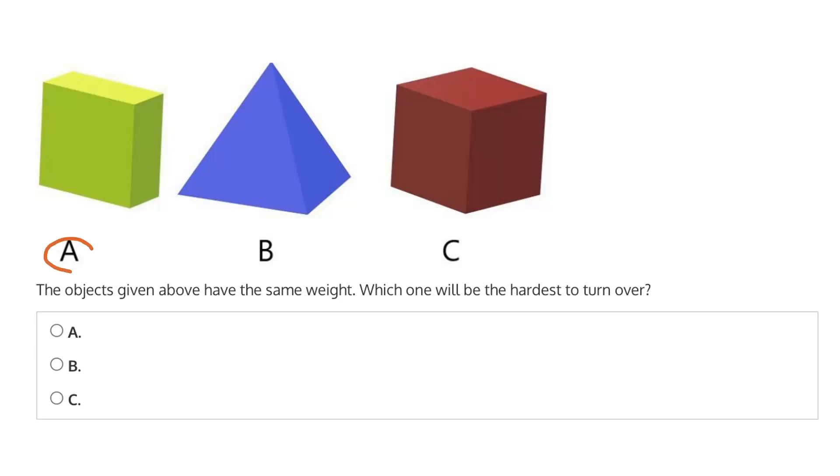Option A, which is a rectangular prism, or a cuboid. Option B, a pyramid. Or option C, a cube.